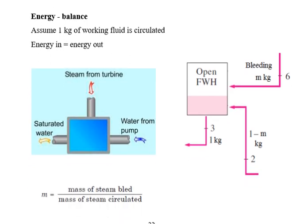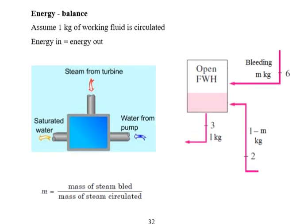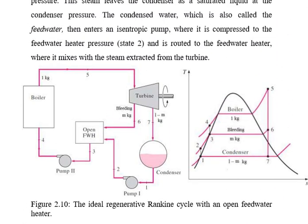Here, m represents the mass of steam bled divided by the mass of steam circulated in the cycle. From this analysis we determine how much heat is added, how much heat is rejected, how much heat is utilized in the cycle, the work output at the turbine, and the work input given by the pump. The key concept is the bleeding section added to the open feed water heater — that is, the amount of steam extracted from the turbine.